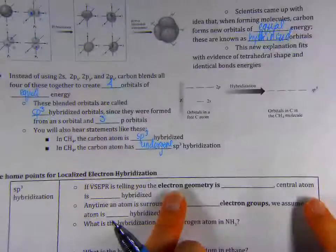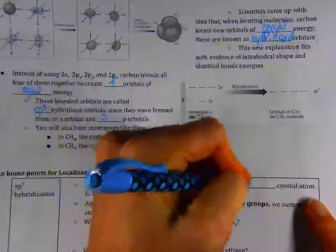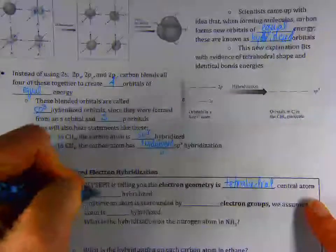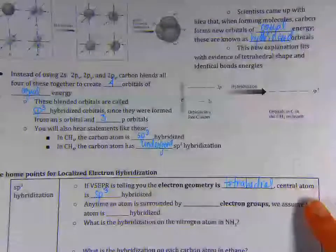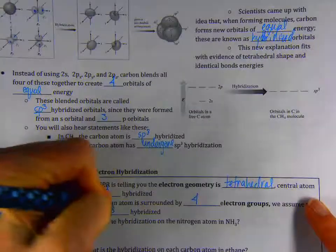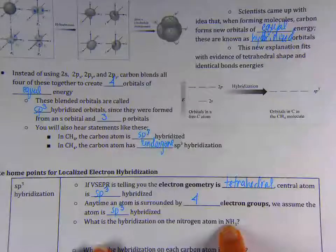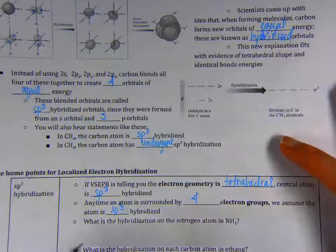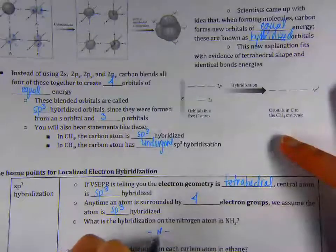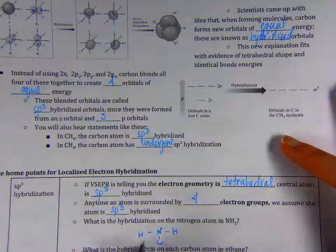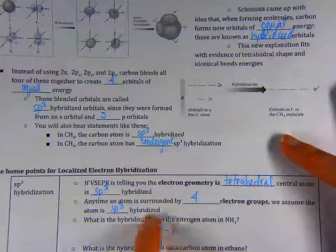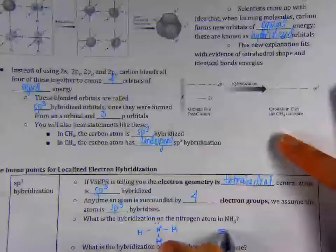If we're talking about sp3 hybridization, and it's for any molecule, not just a molecule with carbon at the center, if VSEPR is telling you that the electron geometry is tetrahedral, that means that there's four groups or things around the central atom, the central atom is going to be sp3 hybridized, from one s and three p orbitals. Another way to think about it, any time the atom is surrounded by four electron groups, we would assume that the atom is sp3 hybridized. So let's take a look here. What is the hybridization on the nitrogen atom in NH3? In order to do this, just like if you're working with VSEPR, you need to draw the Lewis structure first, then think about the electron geometry, and you can take it a step further and think about hybridization. So here we go. The Lewis structure for NH3, if you don't have it memorized yet, it's N in the center, surrounded by three H's, and there's a lone pair on nitrogen. There are four electron groups. We're not just looking at bonds here, remember. So there's four electron groups around the nitrogen. The hybridization on the nitrogen is going to be sp3.